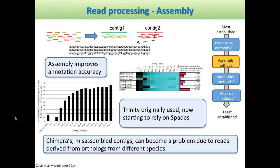Once we've removed all contaminants and are left with putative messenger RNAs, we do an assembly step. The reason we do assembly is that it improves annotation accuracy — if you can assemble relatively short reads into longer contigs, your ability to annotate them rises quite dramatically. We looked at a number of different assemblers a few years ago and found that Trinity gave us the best performance, the highest proportion of reads that could be annotated. However, we've now swapped Trinity for SPAdes. Remember when developing these pipelines to think in terms of modular design, so you can always swap in better-performing algorithms as they're developed.